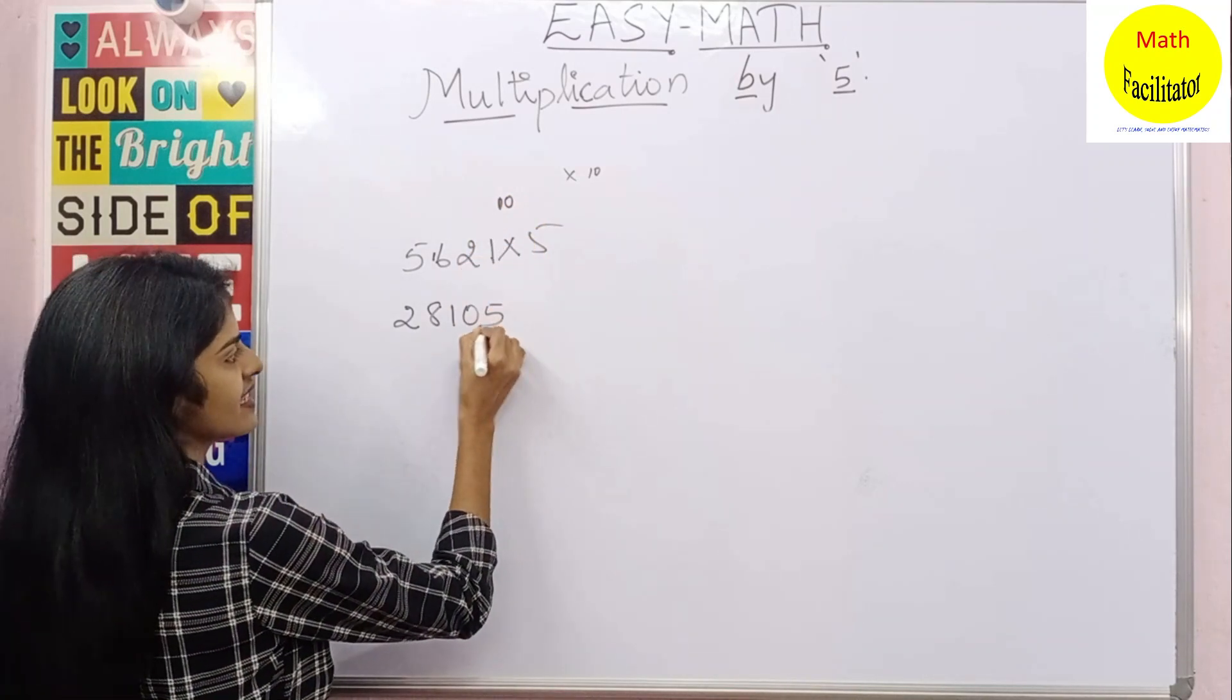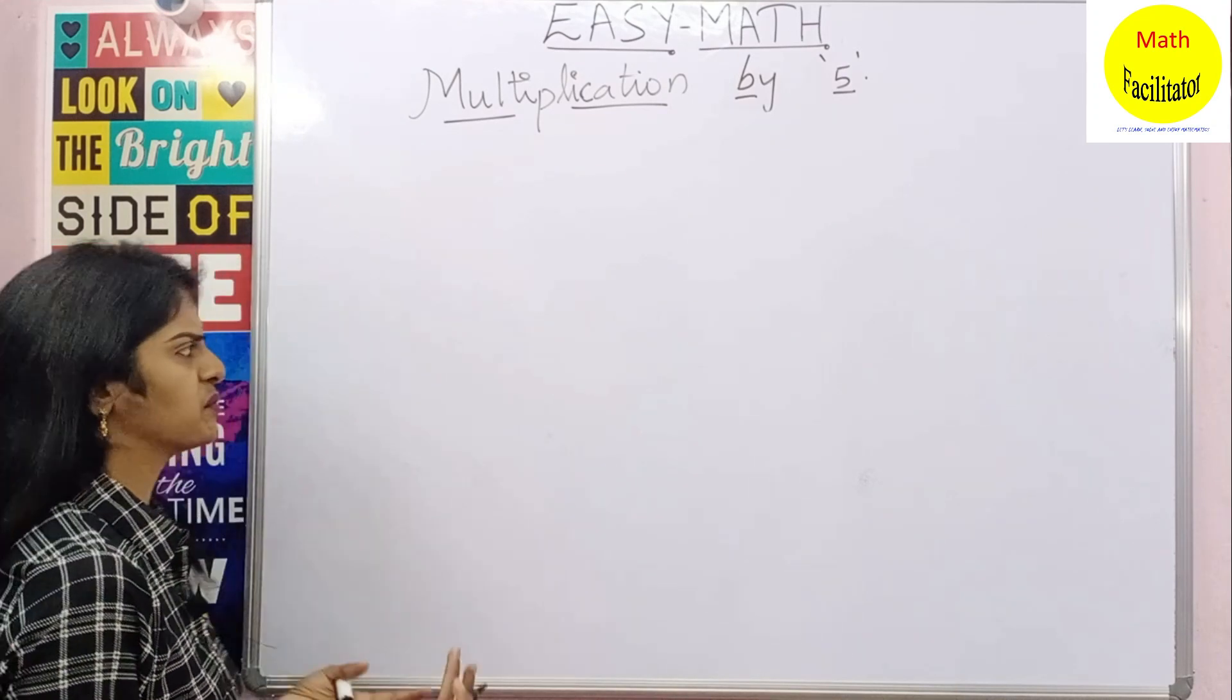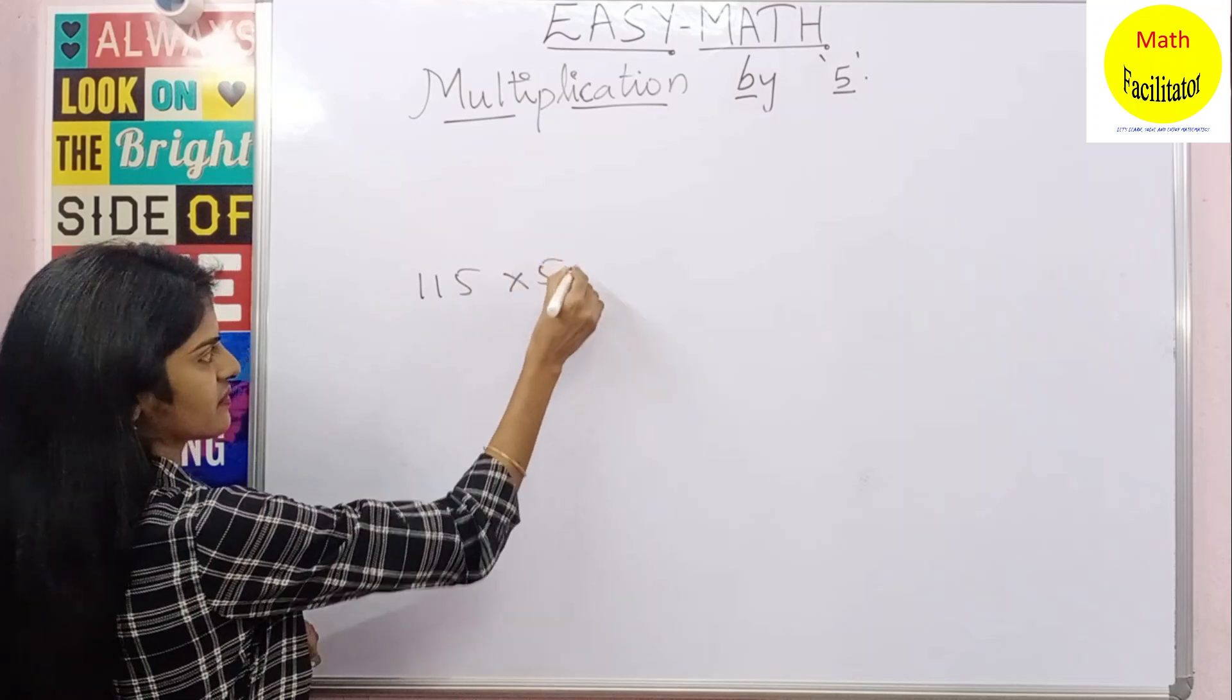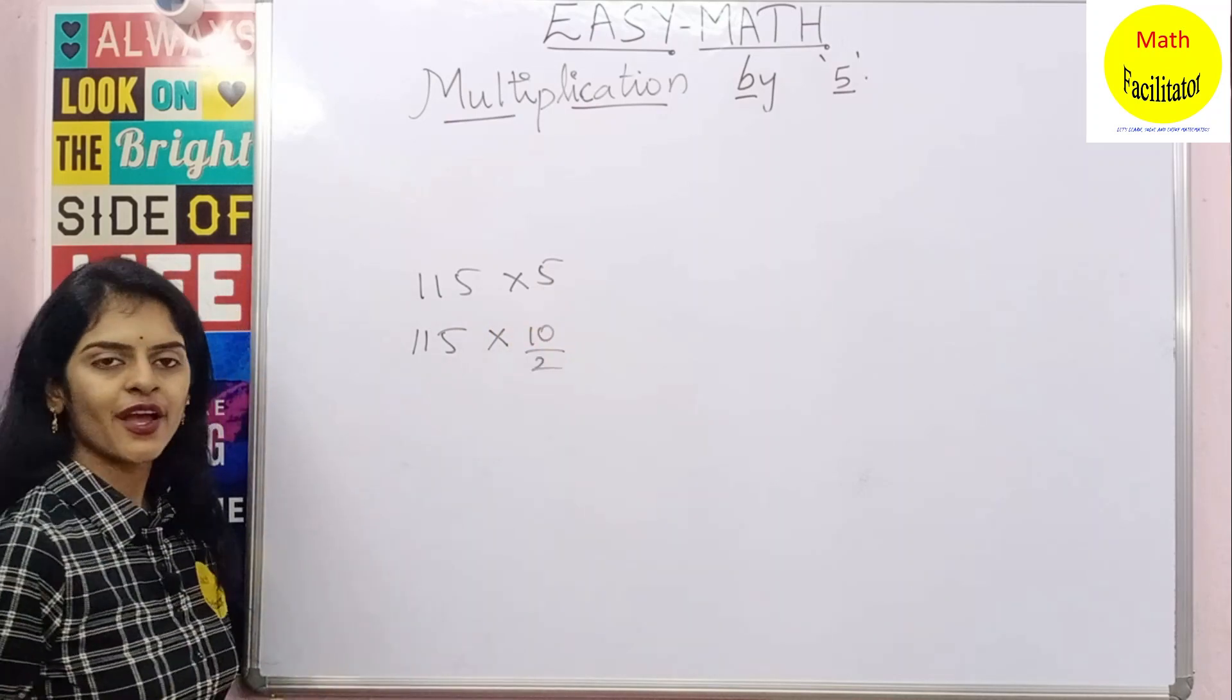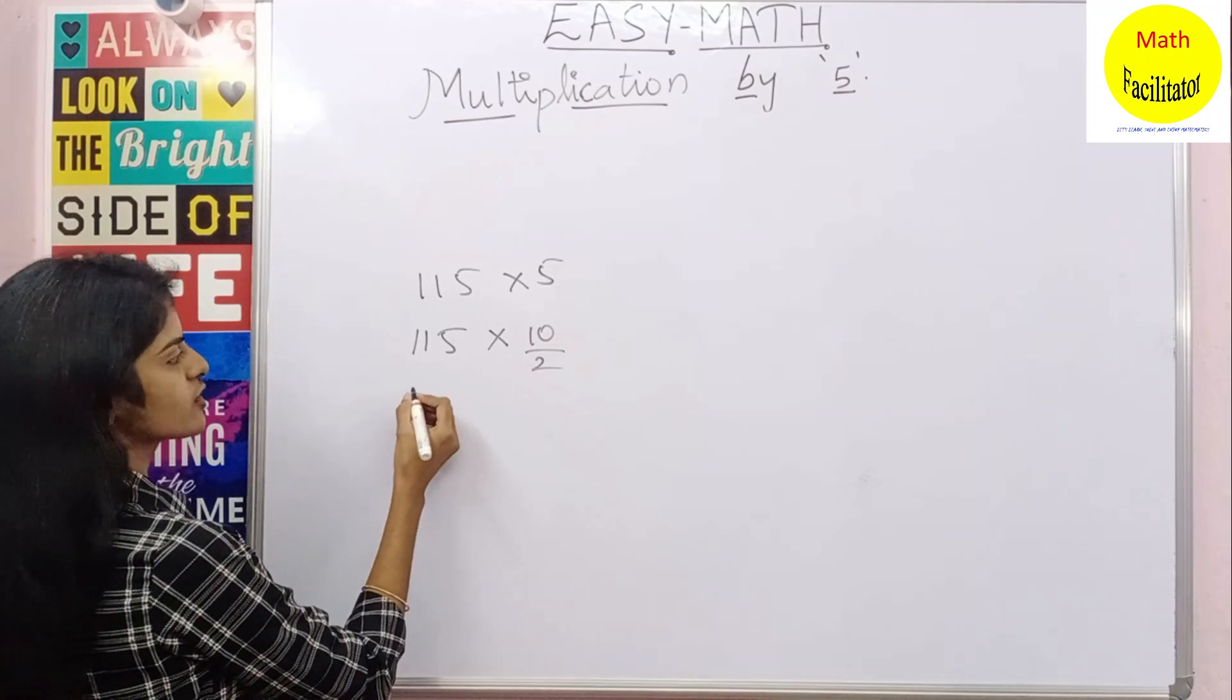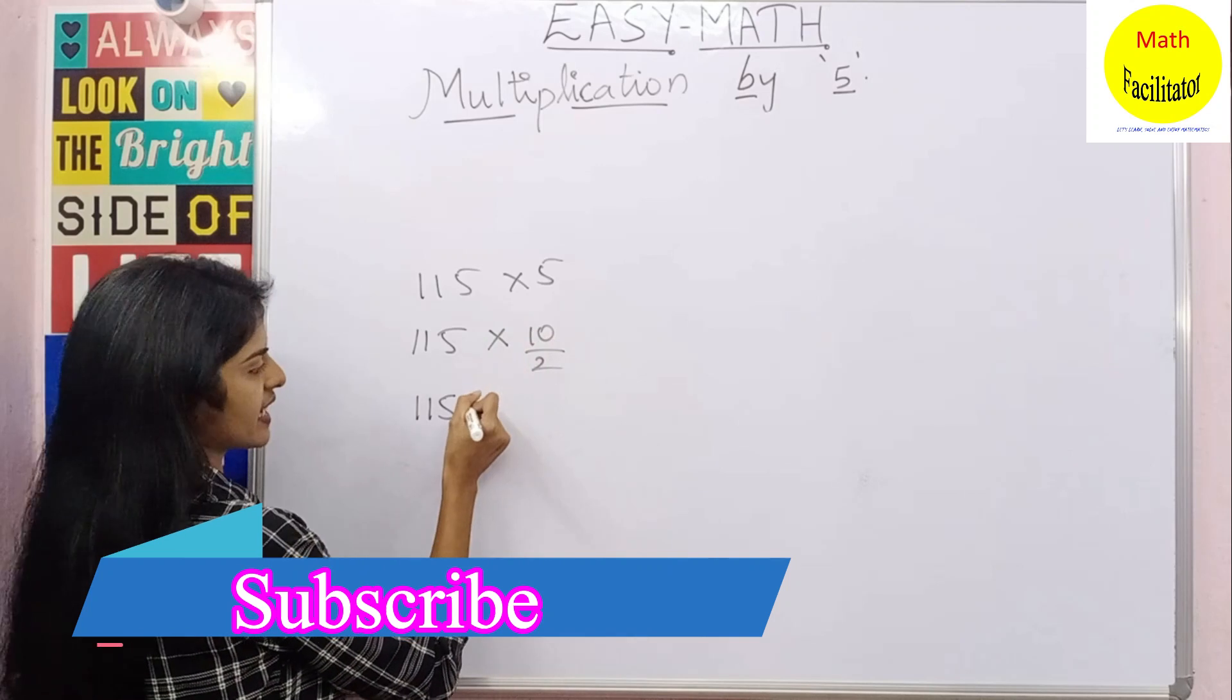Now taking another example, I will take a simple number, say 115 into 5. Let me write the step so that will be clear for you. Now 115 into 5 is nothing but 10 by 2. So you have to divide 115 by 2. This is nothing but 115 into 10 is 1150 divided by 2. Do you agree?